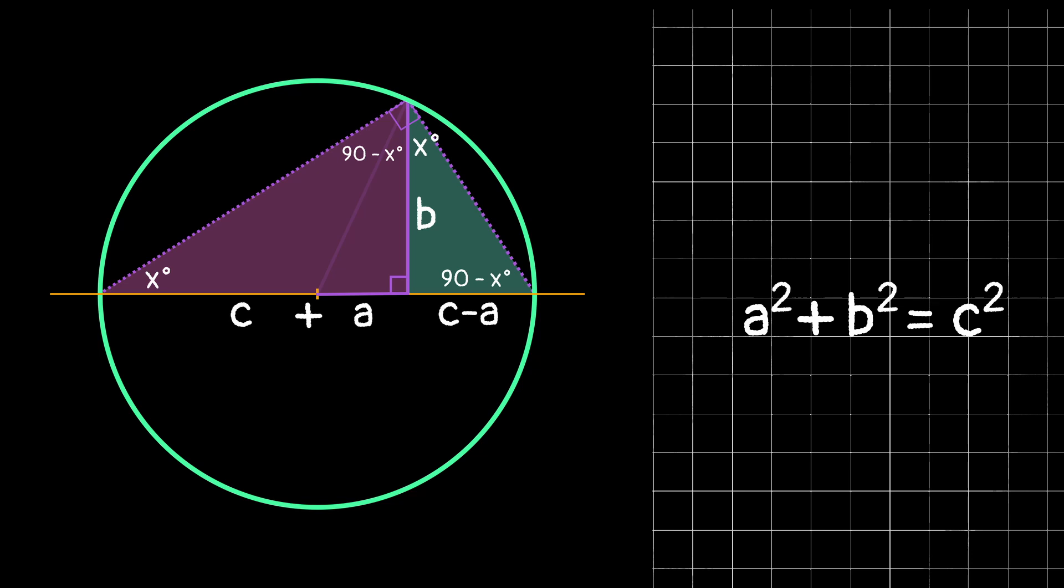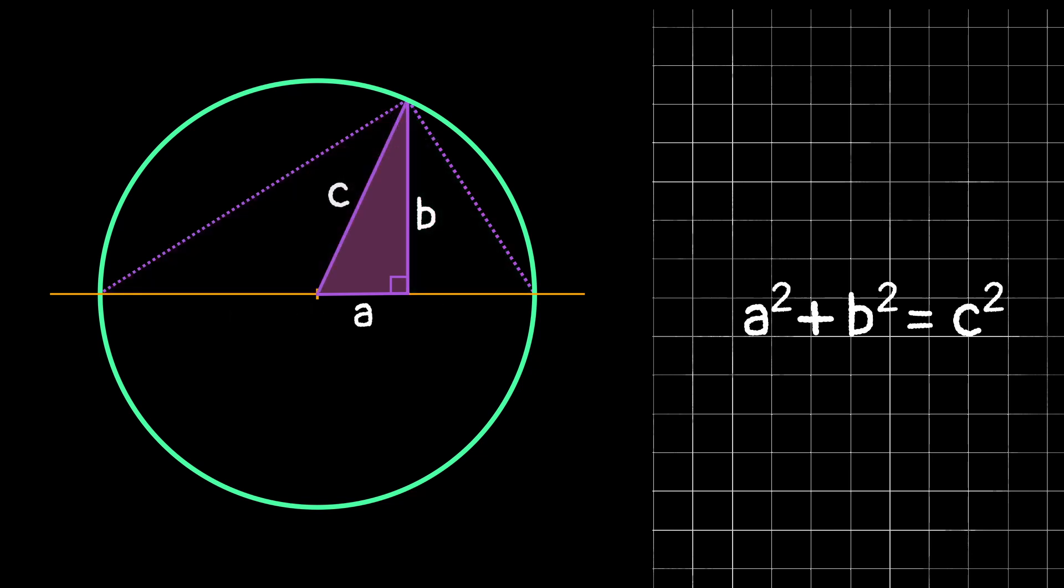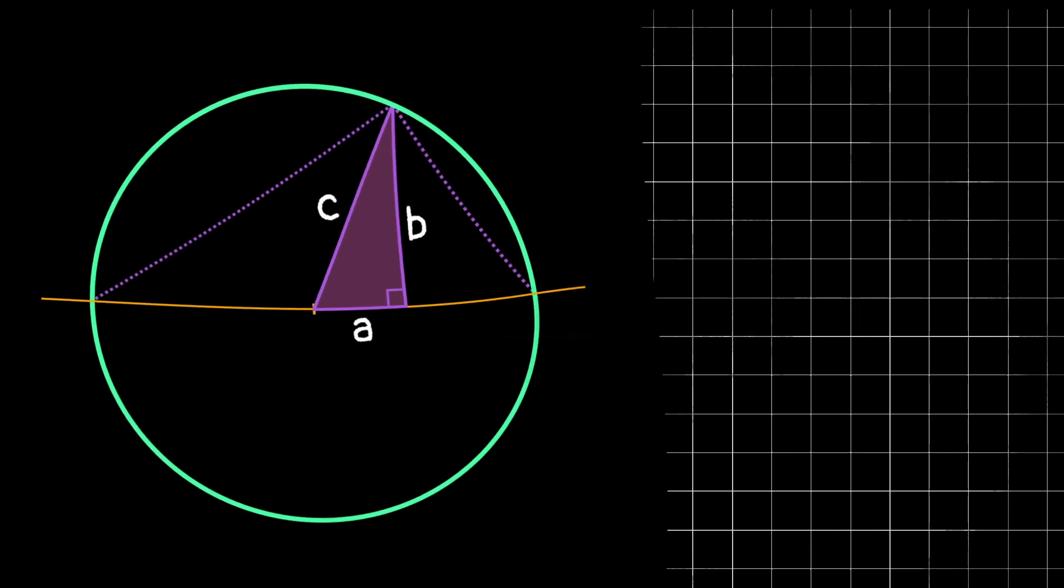And since this a, b, and c are corresponding to those side lengths of the right triangle that we made in the very beginning, we have shown that the Pythagorean theorem works. So now instead of just memorizing it, you have seen at least one method of why this is true.